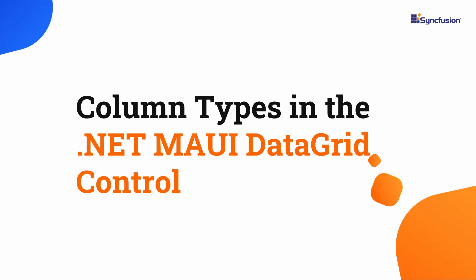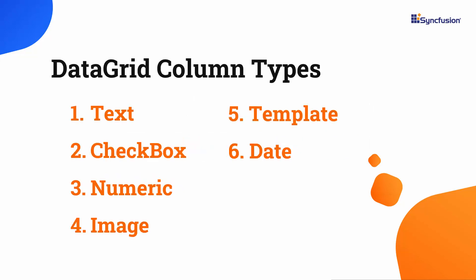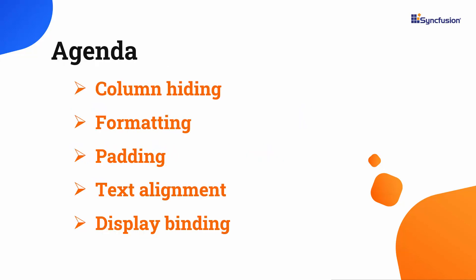Hi everyone, welcome back. In this video, I will show you various column types in the .NET MAUI Data Grid Control. I will also show you how to add the supported column types like text, checkbox, numeric, image, template, and date to the grid, along with features such as column hiding, formatting, padding, text alignment, display binding, and header customization.